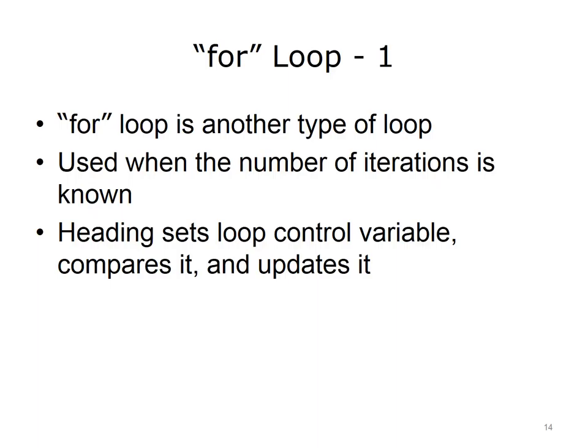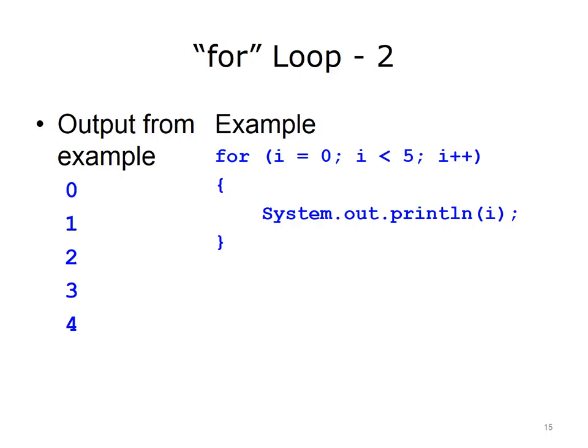A FOR loop is another type of loop. The FOR loop starts with the word FOR and is followed by a three-part statement within parentheses. The first part sets the initial value for the loop control variable. The second part is the condition for the loop — usually a comparison using the loop control variable. As long as this condition is true, the loop will continue to execute. The final part is the update, which changes the value of the loop control variable, eventually making the condition false. FOR loops are useful when the number of iterations is known. In this example, the loop control variable I is initialized to 0, the condition is I less than 5, and the update is to increment I by 1. I++ is shorthand notation for incrementing I by 1. The loop body is a single statement that outputs the value of I to the screen.